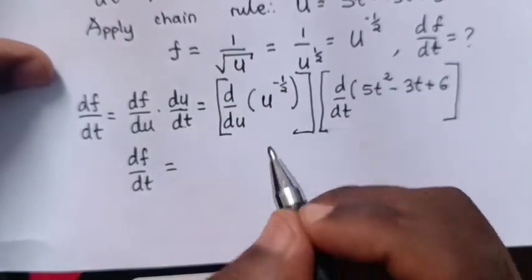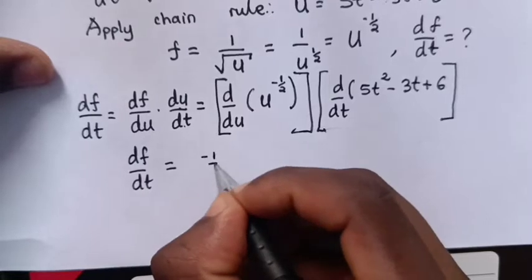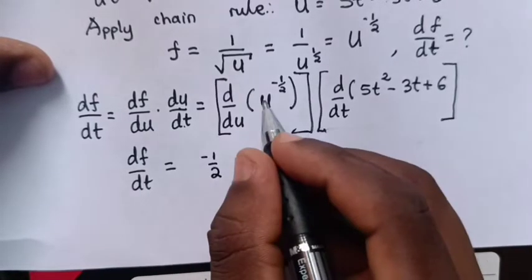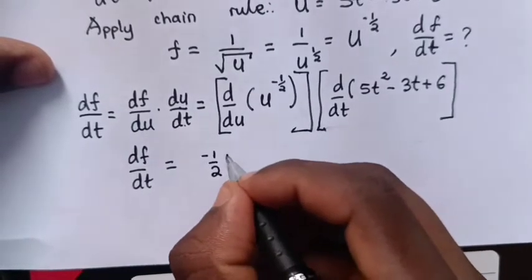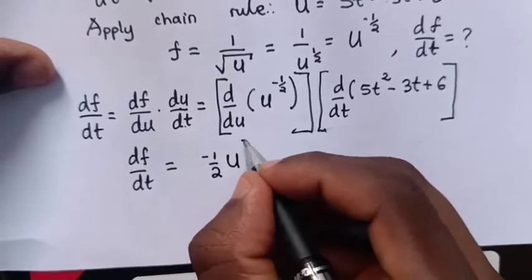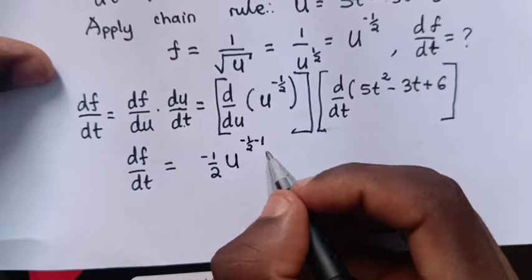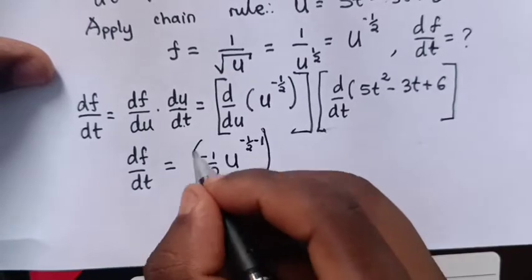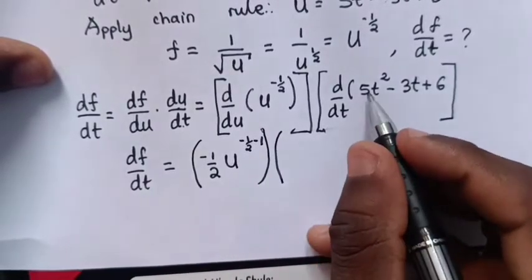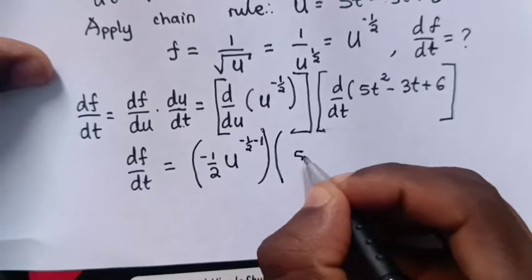So, df/dt equals: power is -1/2, -1/2 times coefficient 1, so u^(-1/2 - 1) bracket times.